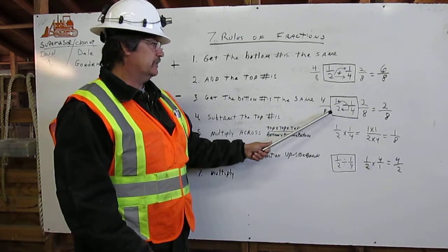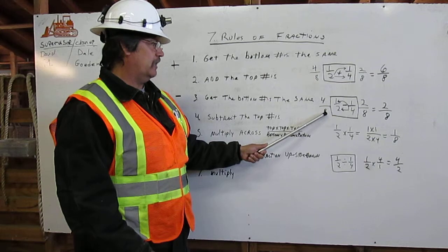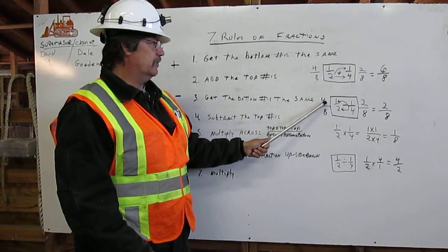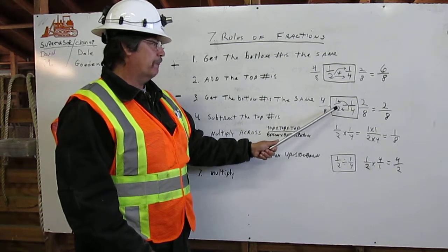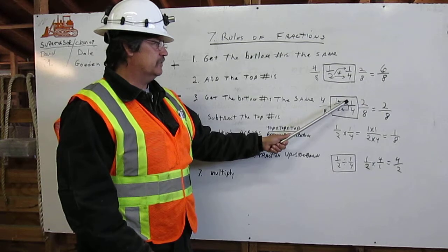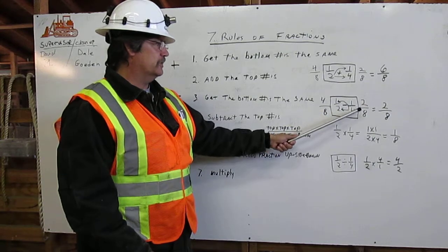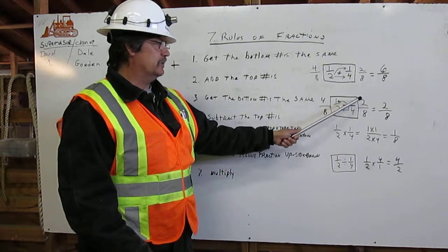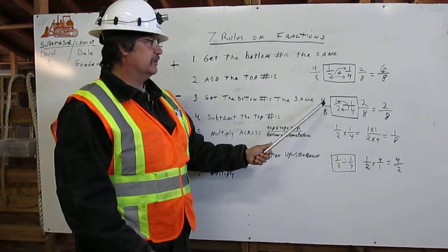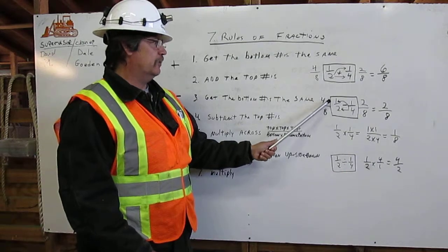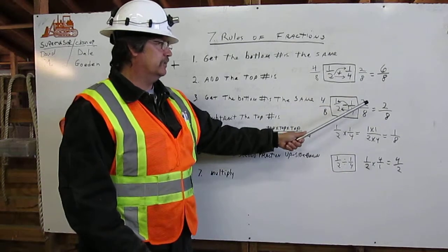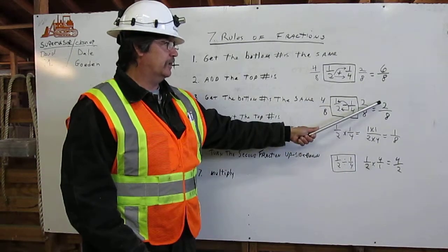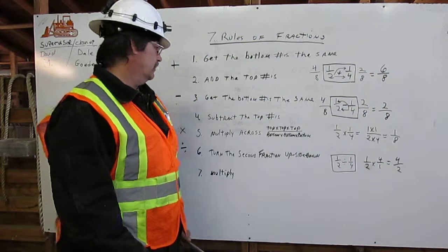Multiply the four times the two to come up with eight, the four times one to come up with four. Then go the other way — two times four is equal to eight, and two times one is equal to two. You then subtract the top numbers: four minus two is equal to two. Bring the eight over, and you have two-eighths.